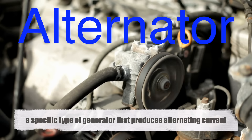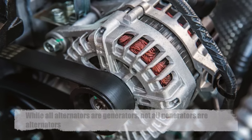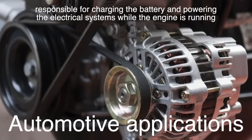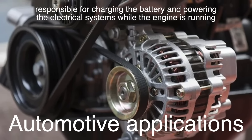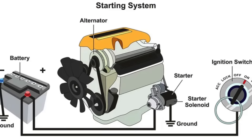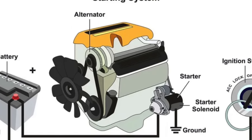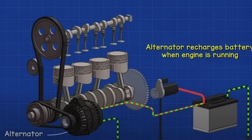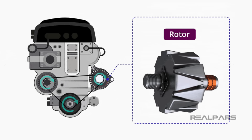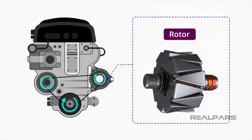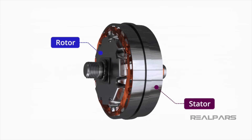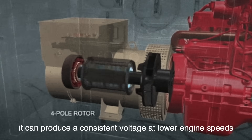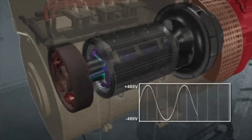An alternator is a specific type of generator that produces alternating current. While all alternators are generators, not all generators are alternators. Alternators are typically used in automotive applications, where they are responsible for charging the battery and powering the electrical systems while the engine is running. Their design is optimized for efficiency and durability. Alternators also operate on the principle of electromagnetic induction, but in an alternator the rotor contains the field windings and is powered by the vehicle's engine through a belt, while the stationary stator contains the windings where electricity is generated. One key advantage is that alternators can produce a consistent voltage at lower engine speeds, which is crucial for vehicles operating across a wide range of RPMs.